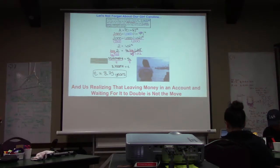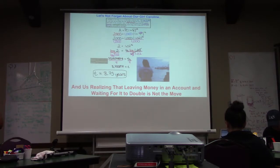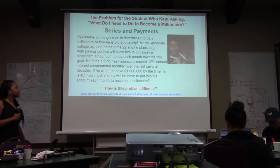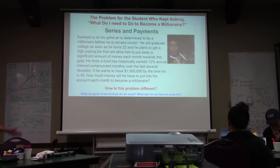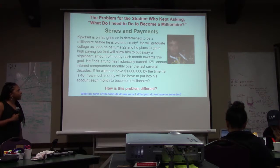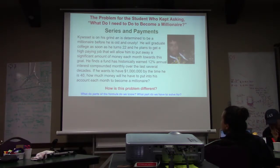Throughout the lesson we build up to solving exponential equations with logarithms, and we realize that leaving money in an account and allowing it to double is not a quick enough strategy if Caroline wants to get to LA quickly. Also in the exponential unit, as we talk about money a lot, one student was always wanting to know what he needed to do to become a millionaire — and not when he's old. So I designed a problem: how long will it take him to become a millionaire by age 40 if he has a fund that earns 12% annually, compounded monthly?